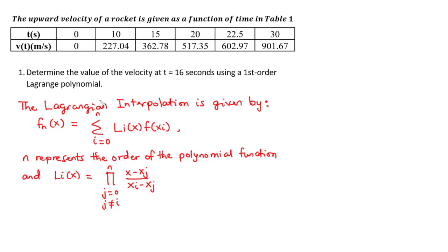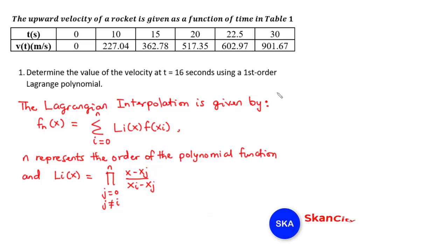We are going to use these two formulas to solve this problem. In this problem, we are going to determine the value of the velocity at t equals 16 seconds using a first-order Lagrange polynomial. We've already solved this question using the direct method of interpolation; the only difference here is that we will solve it using a first-order Lagrangian polynomial.